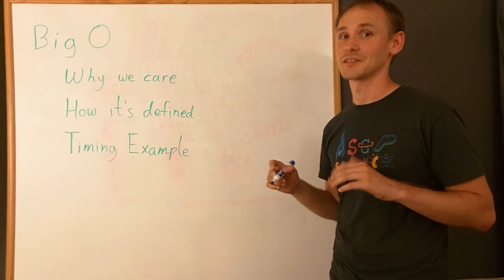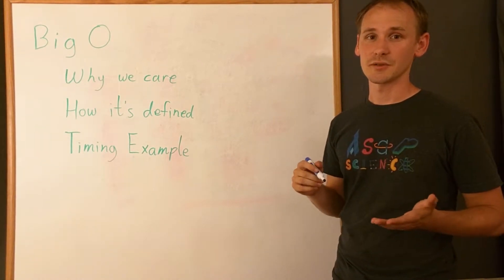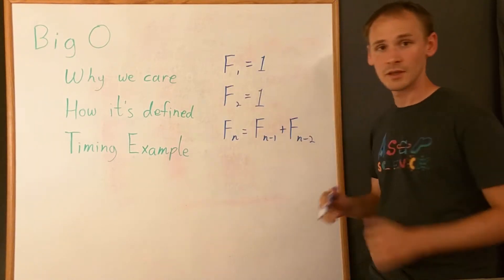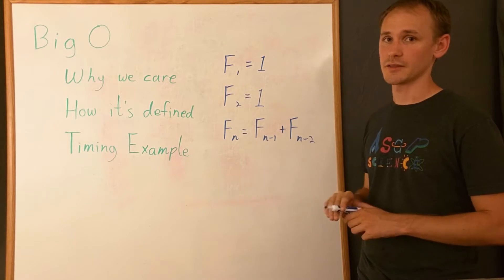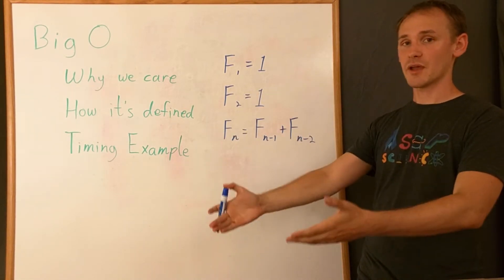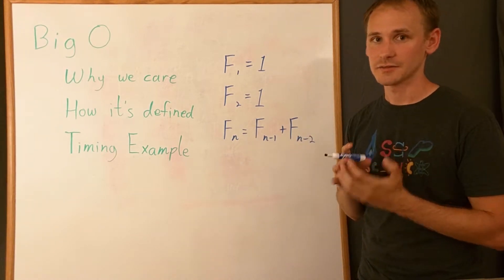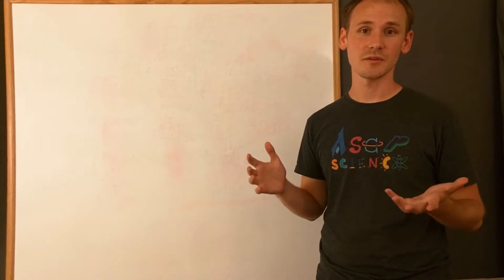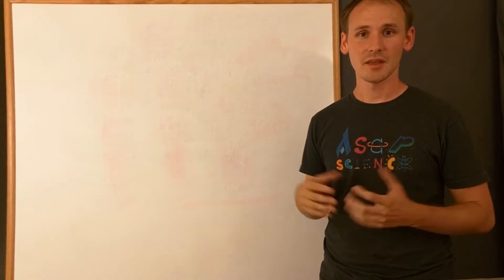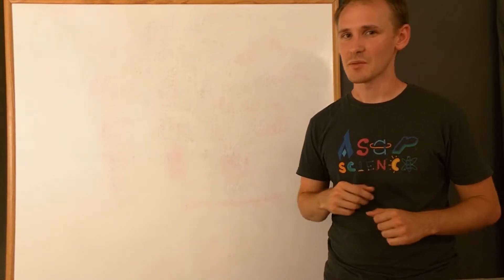So now I want to talk about the timing example. So we're going to look at some actual C++ code that calculates the Fibonacci sequence. And if you're not familiar with the Fibonacci sequence, that's okay. The Fibonacci sequence is defined like this. The first two numbers in the sequence are just one, and then every number after that is just the two previous numbers added together. And you might be wondering why I'm using the Fibonacci sequence. Mostly because it's really easy to write demos with, and it's relatively simple to understand compared to a real-life example.